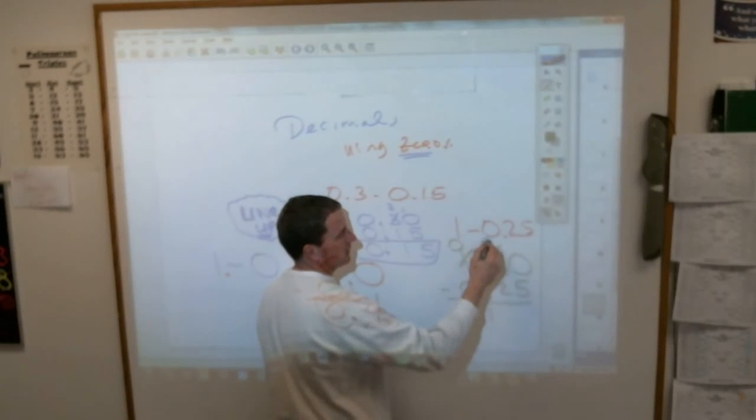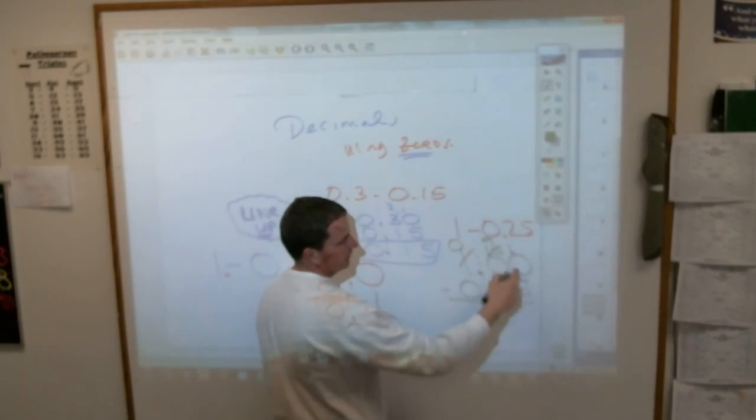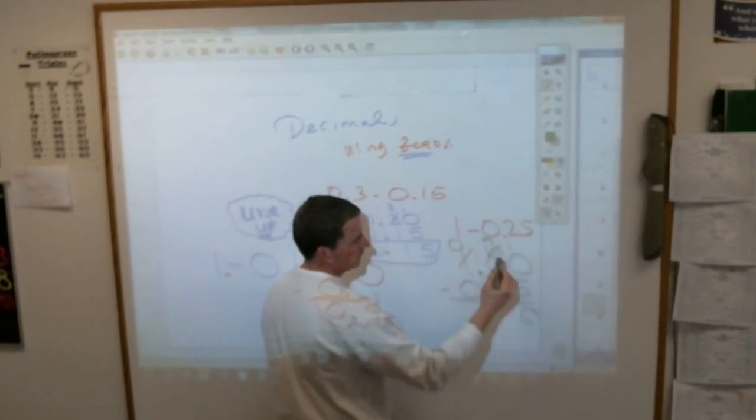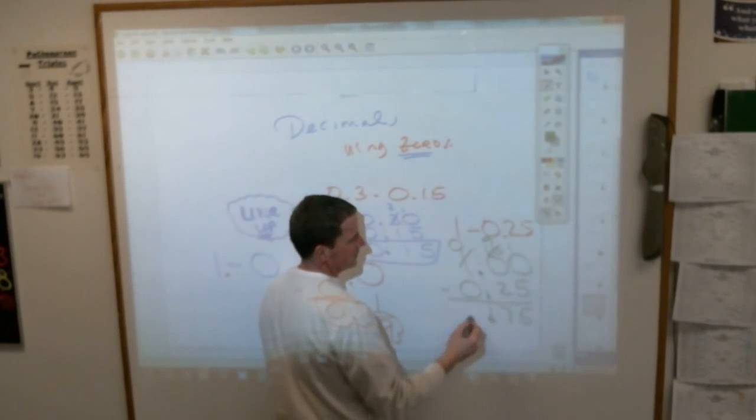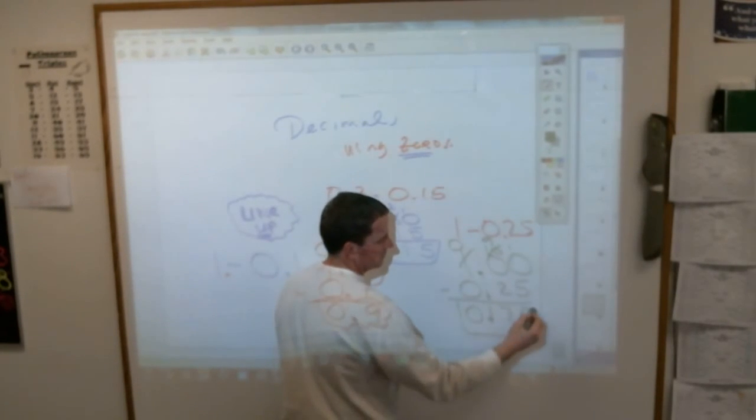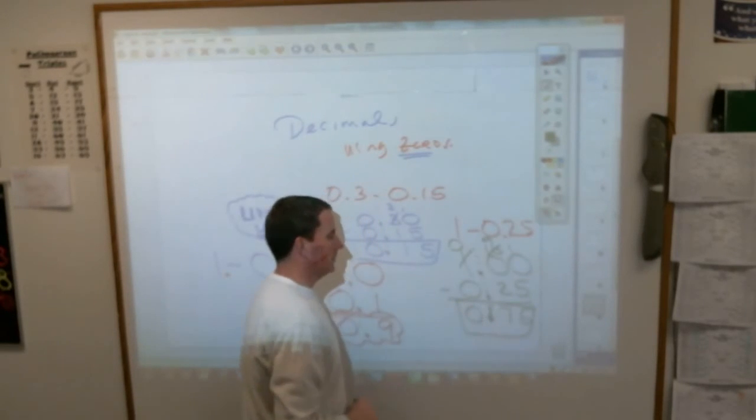this becomes a 10, you've got to borrow from that, it becomes a 9. 5 from 10 is 5. 2 from 9 is 7. Make sure your decimal lines up. You don't really need that beginning 0, but that's 0.75.